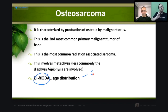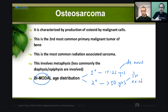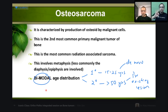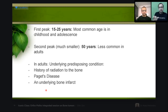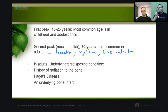Osteosarcoma has a bimodal age distribution. The first peak is at 15 to 25 years — adolescents and children — which is the more common age group. The second peak is at more than 50 years of age, occurring because of pre-existing lesions: history of radiation to bone, Paget's disease, or an underlying bone infarction. These are the predisposing conditions for the second peak in adults.